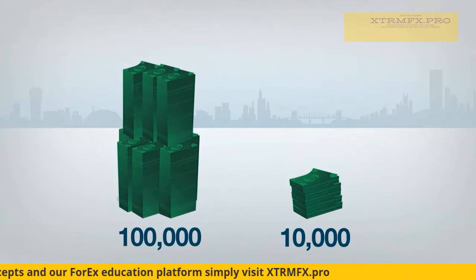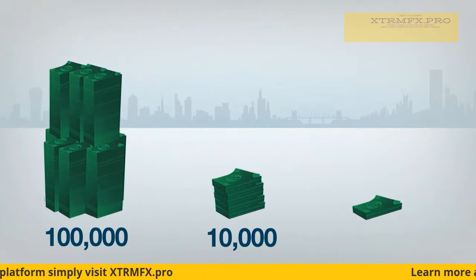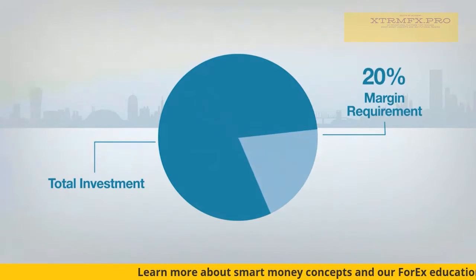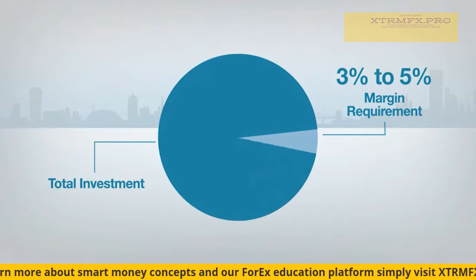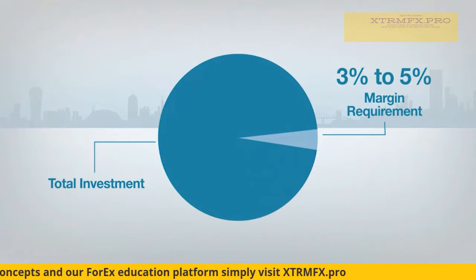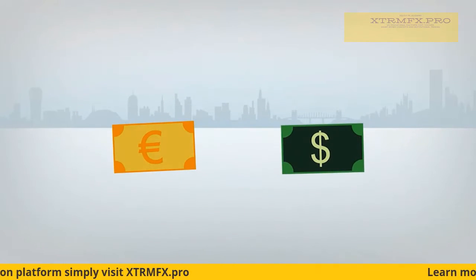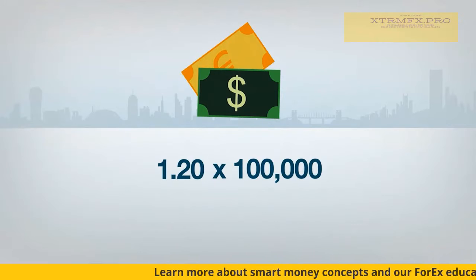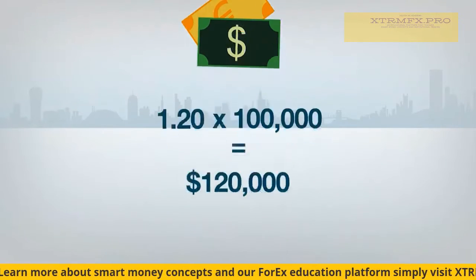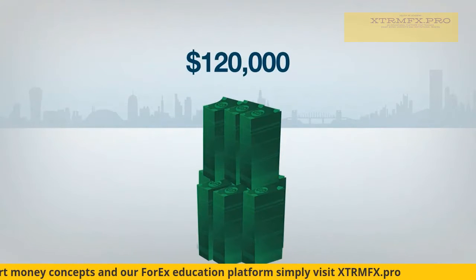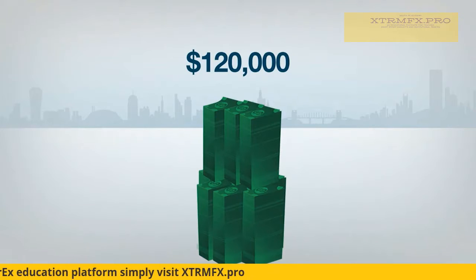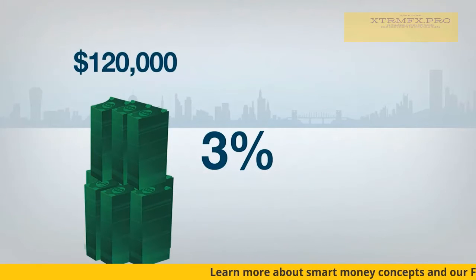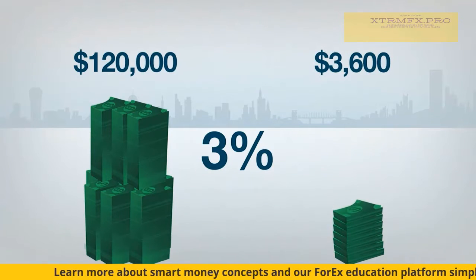Depending on your brokerage firm, you may also be able to trade forex in 1,000-unit increments, also known as micro lots. Margin requirements can be as small as 2% or as large as 20%, but most currency pairs average around 3% to 5%. For example, if the EUR-USD is trading at 1.20 and an investor buys a standard lot of 100,000 units, the total cost is $120,000. At a 3% margin requirement, the investor only needs $3,600 in her forex account to place that trade.